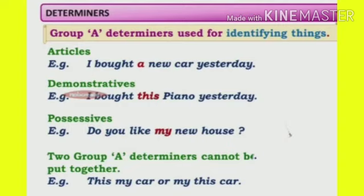One more important thing: Group A determiners cannot be put together. For example, 'this my car' or 'my this car' — these sentences don't make proper sense. Both are not correct. In this way, Group A determiners cannot be used together in the same sentence.